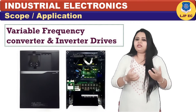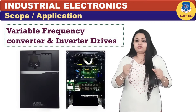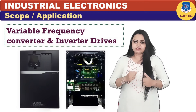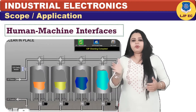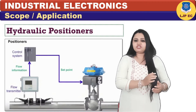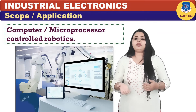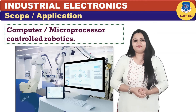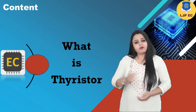Some of the specialty equipment used in industrial electronics includes variable frequency controls, variable frequency counters and inverter drivers, human machine interfaces, hydraulic positioners, and computers or microprocessor controlled robotics electronics.